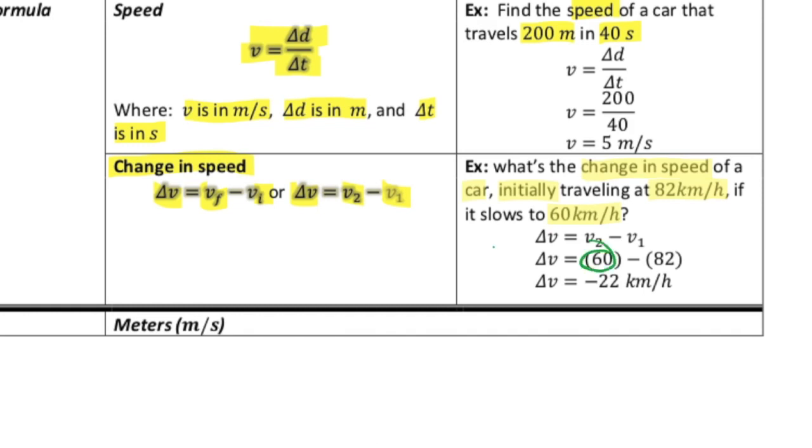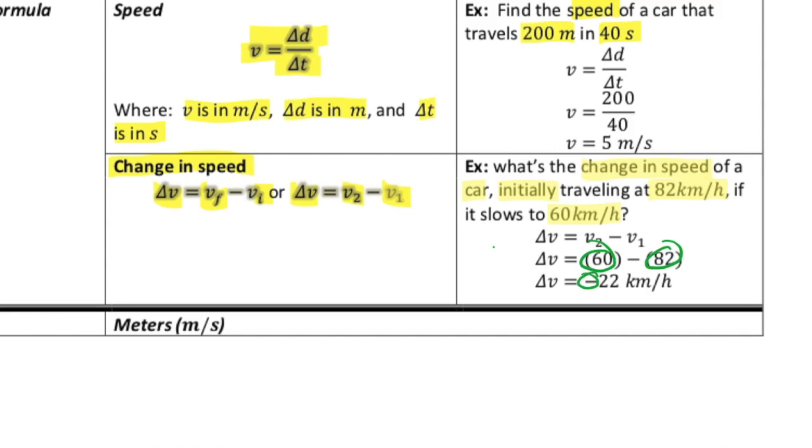So the final speed was 60, initial was 82, and that is a change of negative 22 kilometers per hour. So the negative implies that we are slowing down. And the standard unit is the meter per second. But we also will sometimes use kilometers per hour as well.